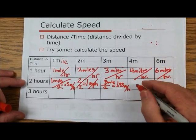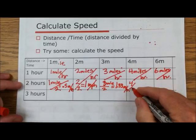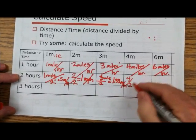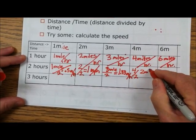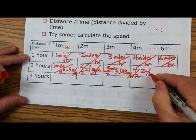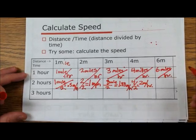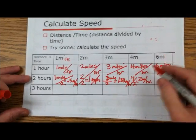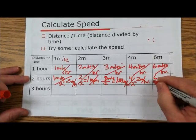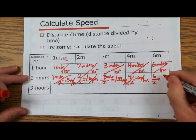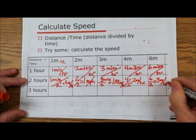The next one is four miles divided by two hours. Four over two is two miles per hour. And the last one is six miles over two hours. Six divided by two equals three miles per hour.